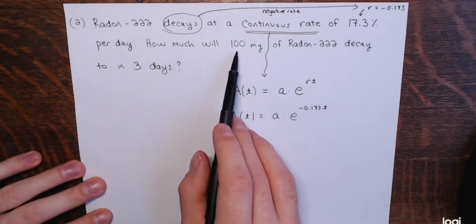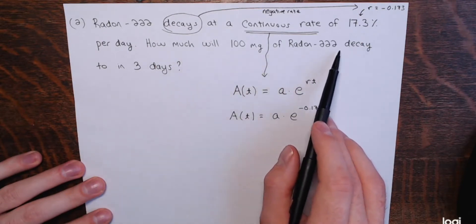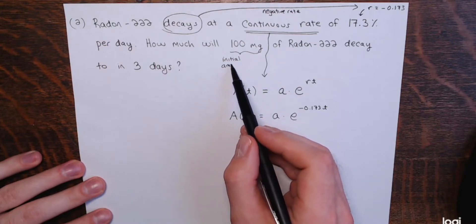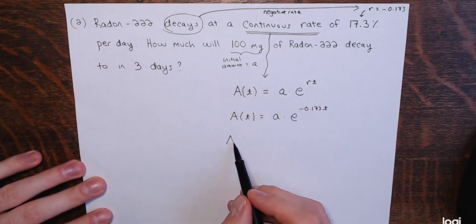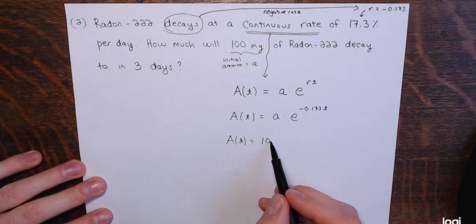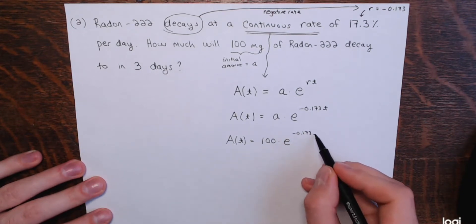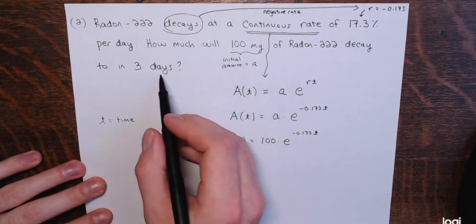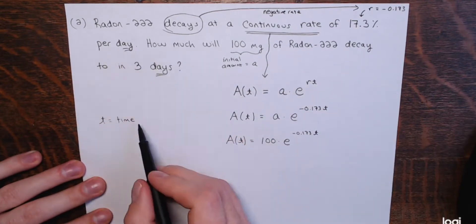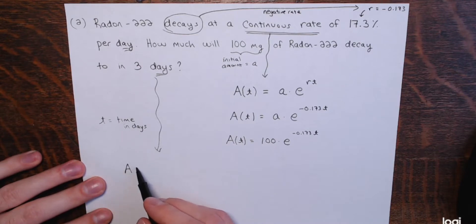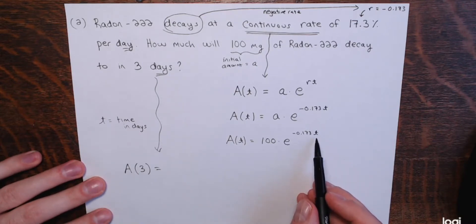The question is: how much will 100 milligrams of Radon-222 decay to in three days? So 100 milligrams is the initial amount — the value of lowercase a at time zero. The model looks like: A of T equals 100 times E to the negative 0.173 times T, where T represents time in days. Then to find how much radon is left after three days, I find A of 3 — I just plug in 3 for T in this decay model.